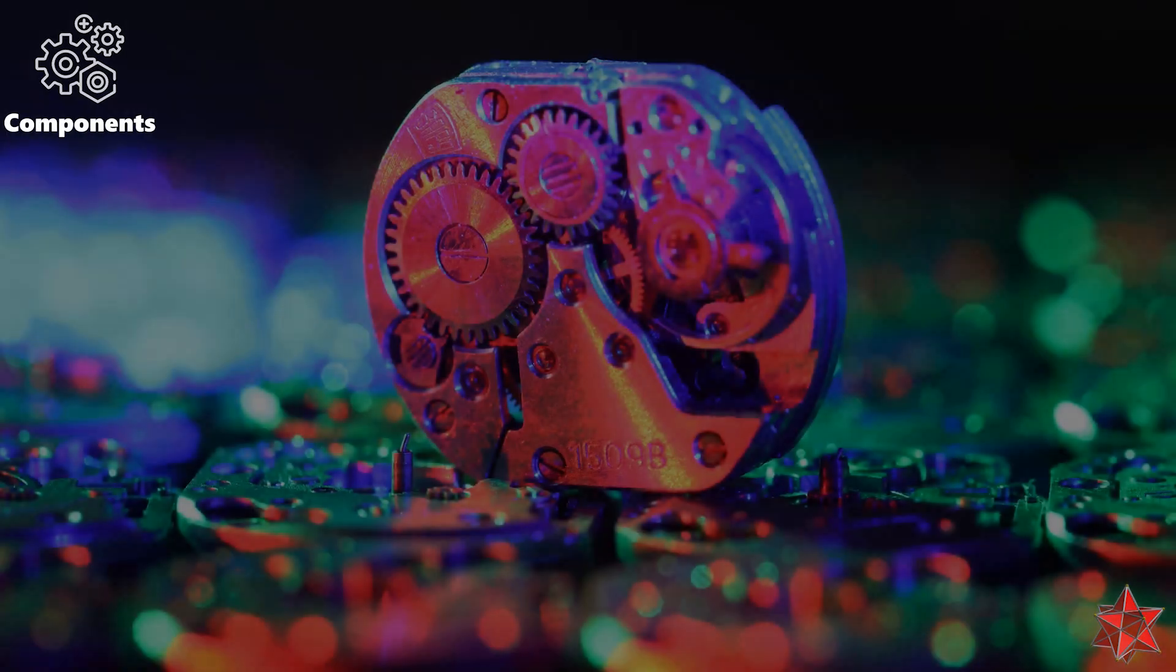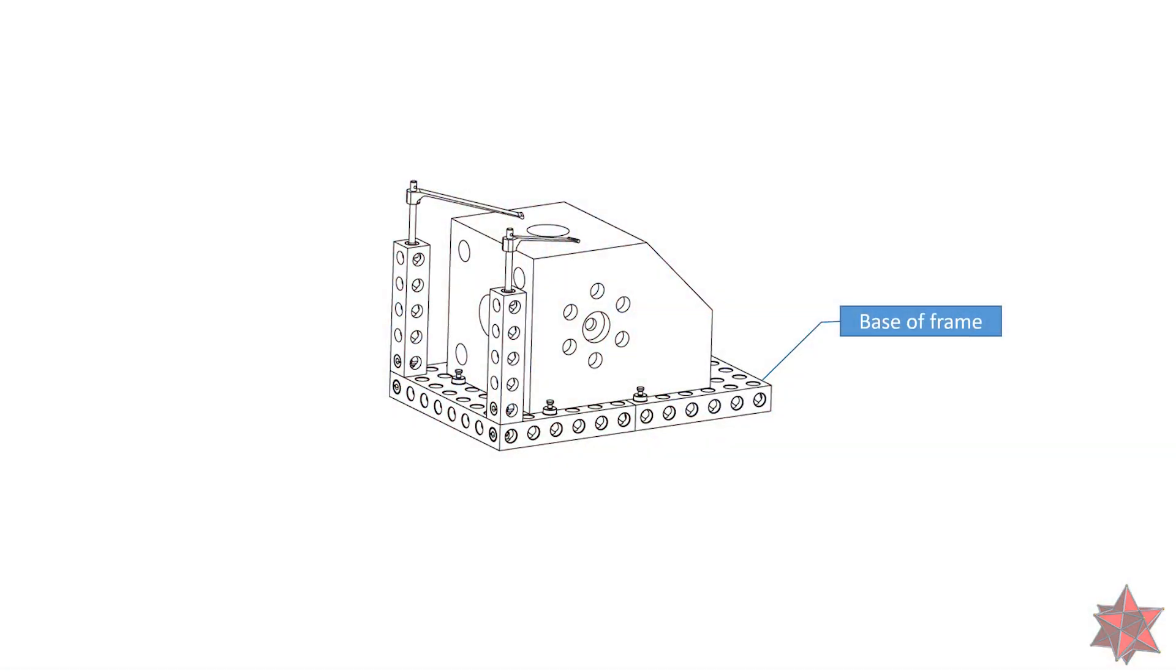A typical fixture is made up of several critical components. These components each serve a specific purpose. The base of the frame provides a solid foundation and support for both the part and the measurement system. Contact points are used to specify precise measurement reference points on the part.